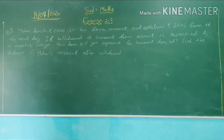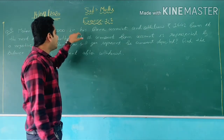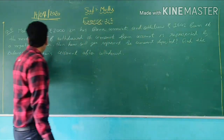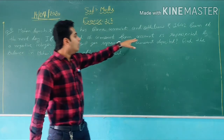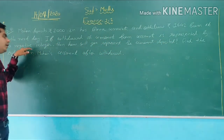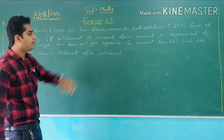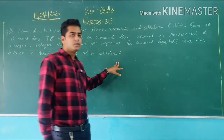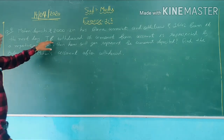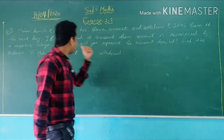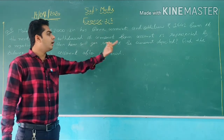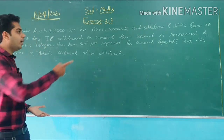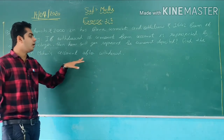Question number 5 says: Mohan deposited 2000 rupees in his bank account and withdrew 1642 rupees from it on the next day. If withdrawal of the amount from the account is represented by a negative integer, then how will you represent the amount deposited? And the second question is: find the balance in Mohan's account after the withdrawal.